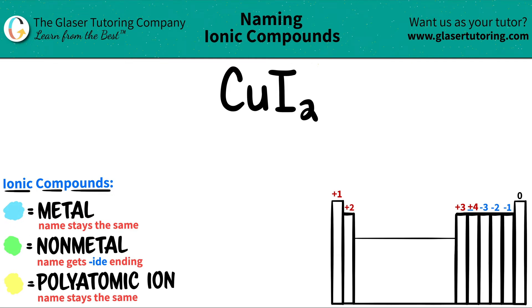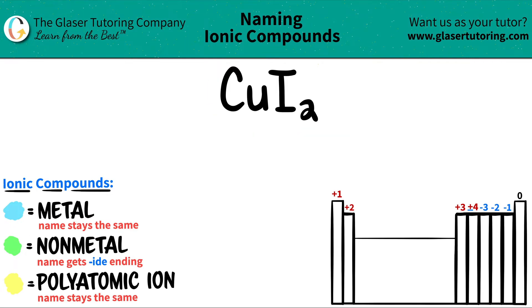Today we are going to be naming the ionic compound CuI₂. So we have two different elements here: CU for copper and I for iodine.